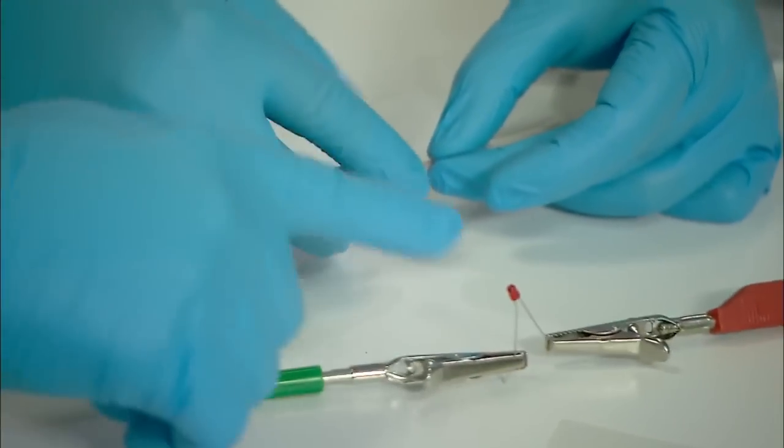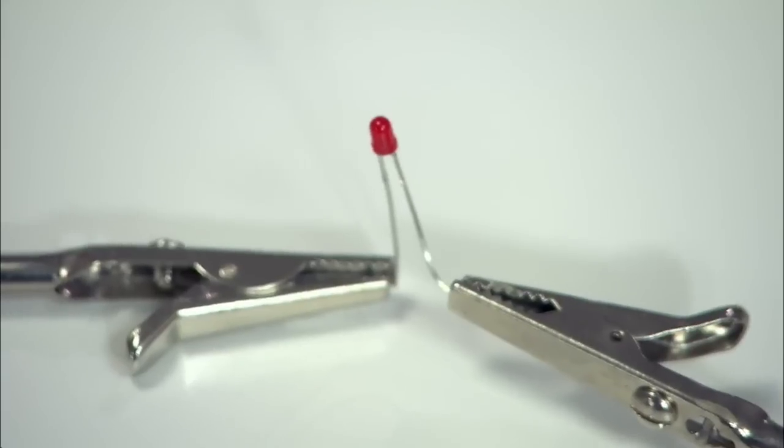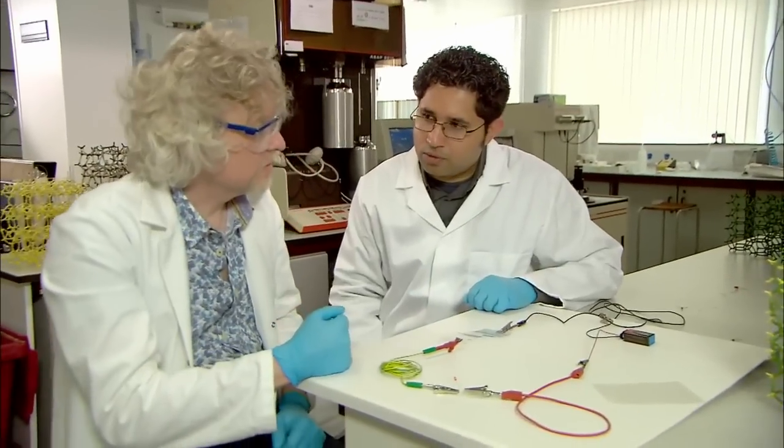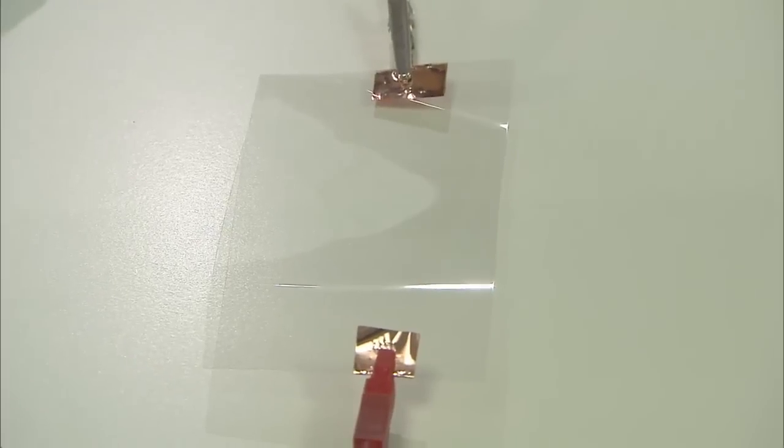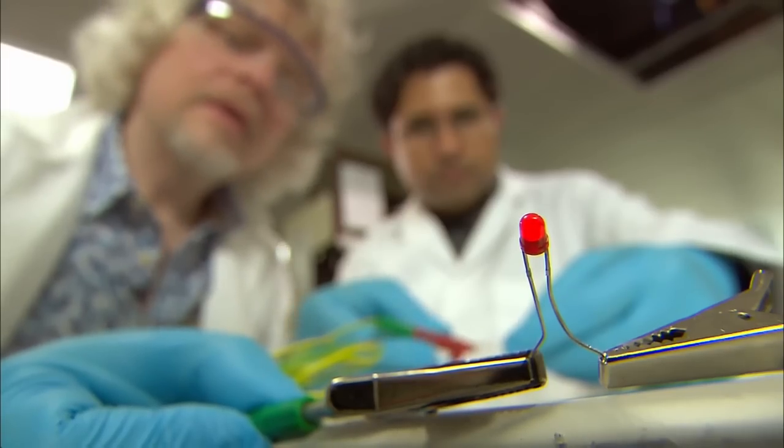something remarkable happens. And we have an LED lamp there. And as soon as you wire it up, the lamp starts to glow, which means that there is current flowing through a piece of plastic.